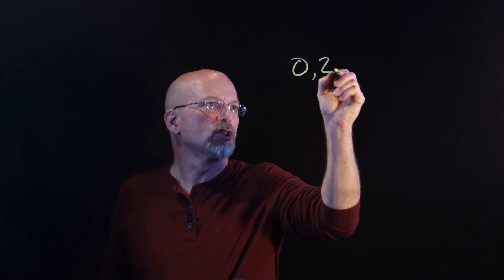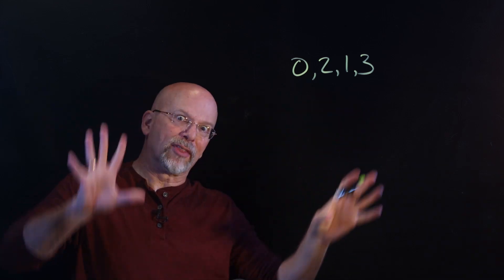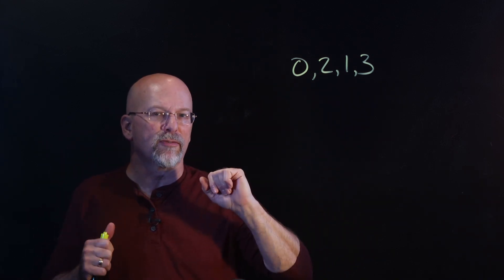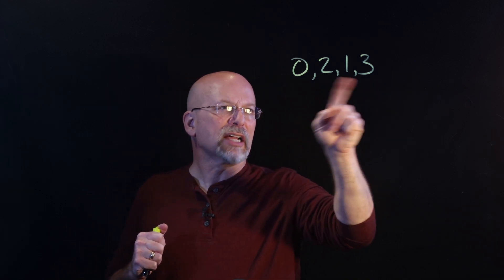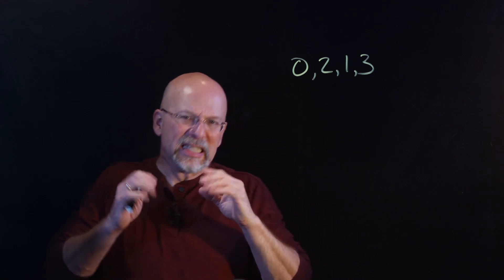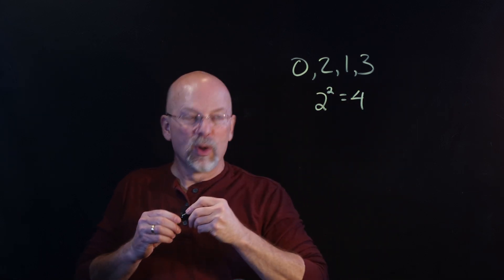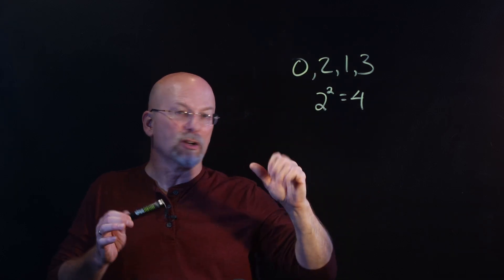Remember with linear feedback shift registers you couldn't have all zeros as one of the states. That's not the case when generating these simple sequences. Let's start with a simple sequence: 0, 2, 1, 3. We want to generate that using memory devices. We have four different patterns — four different states. Two squared equals four, which is sufficient to represent all the values we need.